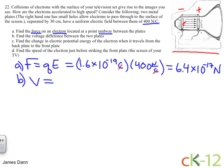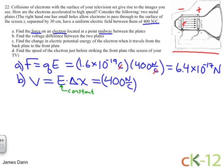The electric field is constant, therefore the voltage is just the electric field times the distance between the two plates. What I mean by constant is the electric field does not change as you go from one side to the other. If it does change, you need to integrate. But in our case, it's a simple positive plate and negative plate, so we can use the simpler version: electric field times distance. The electric field is 400 N per coulomb, and the distance between the plates is 30 centimeters, which equals 0.3 meters. 400 times 0.3 meters gives 120 Nm per coulomb, which is a volt — 120 volts.